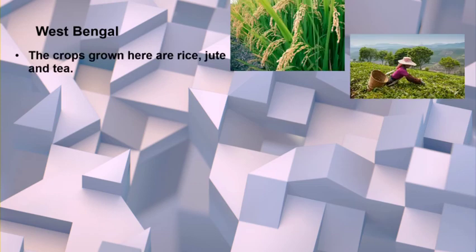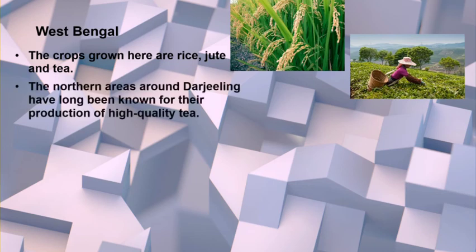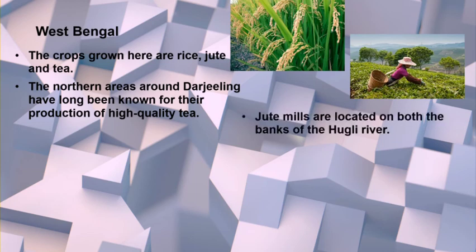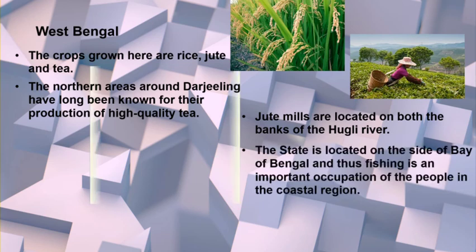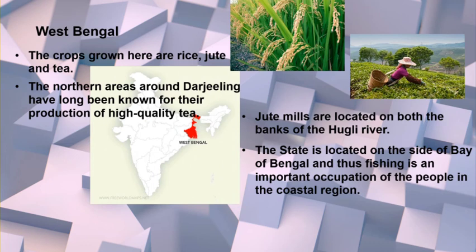In West Bengal, the crops grown are rice, jute and tea. The northern areas around Darjeeling have long been known for high quality tea production. Jute mills are located on both banks of the Hooghly river. The state is located on the side of the Bay of Bengal, so fishing is an important occupation of the people in the coastal region.